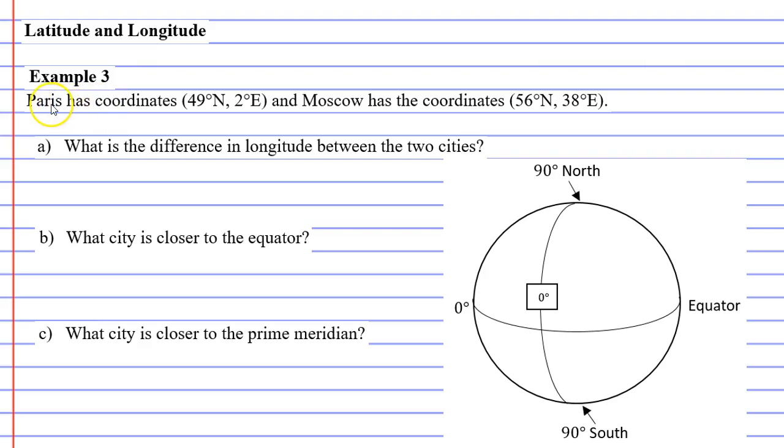Alright, so we'll start with Paris, which is 49 degrees north. Now the first coordinate, I will remind you, is latitude, and the last coordinate is longitude. We'll write this here as well, latitude and longitude.